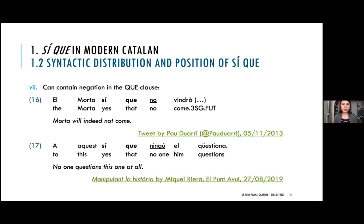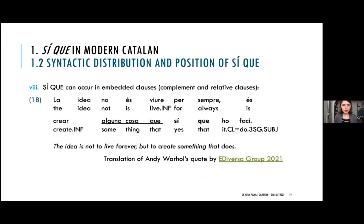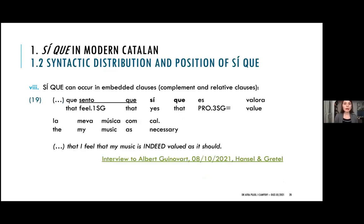The C clause can contain negation and negative polarity items, even though C is a positive polarity item, as we can see in these two examples. And SICA can occur in embedded clauses — be them relative clauses, as in example 18 where the antecedent alguna causa is modified by a relative clause containing SICA, or complement clauses, as with the verb 'to feel': 'Crec que si que és valorada la meva música' — 'I feel that indeed my music is valued as it should be.'